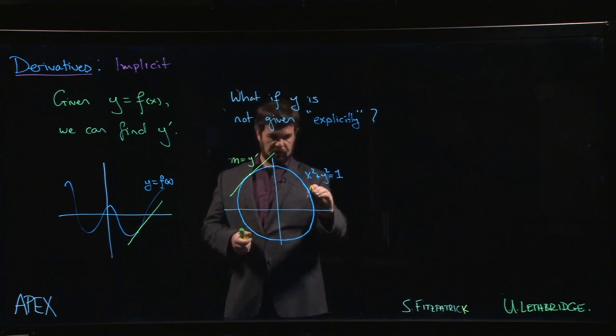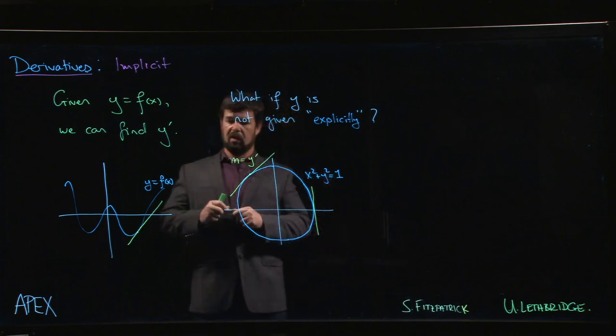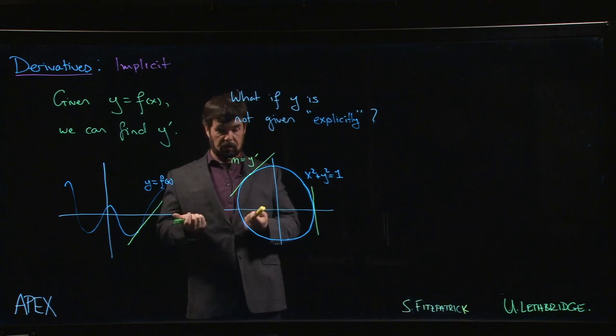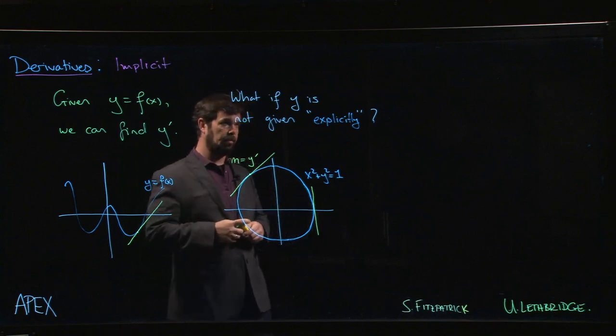Of course there are a few places where maybe we have a tangent line but the slope is not defined. There are two points on the circle where the tangent line is vertical, slope is undefined, so it's not clear what we might be able to say about y prime in those cases. But otherwise, we should be able to say something.